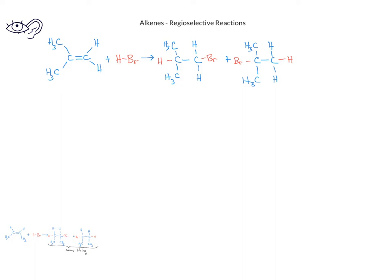In fact, when we carry out this reaction in the lab, we only get one product, and that's the one with the hydrogen bonded to the sp2 carbon that already has two hydrogens attached.